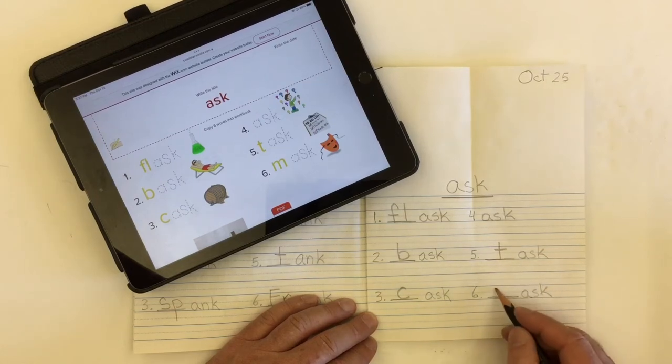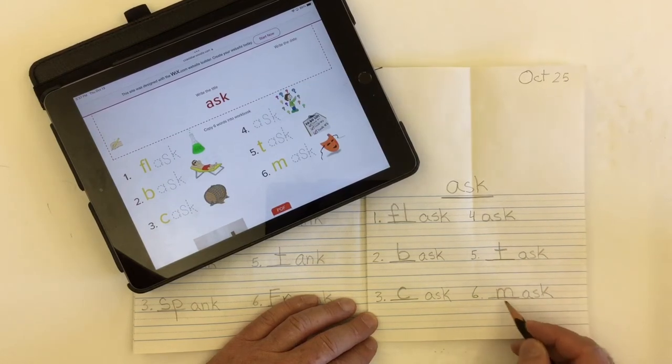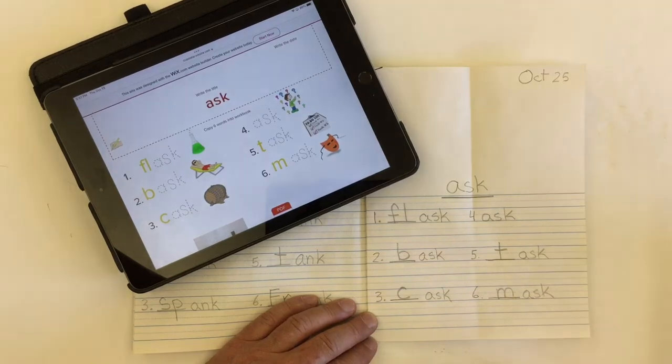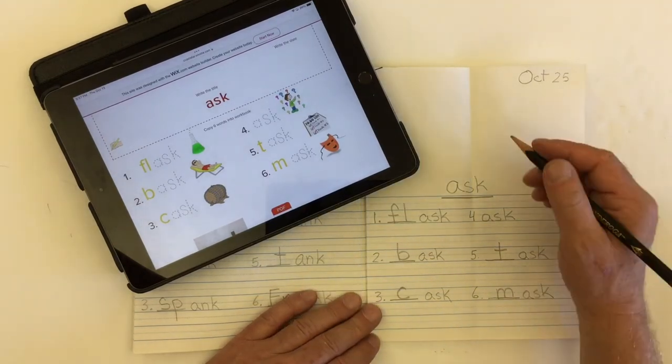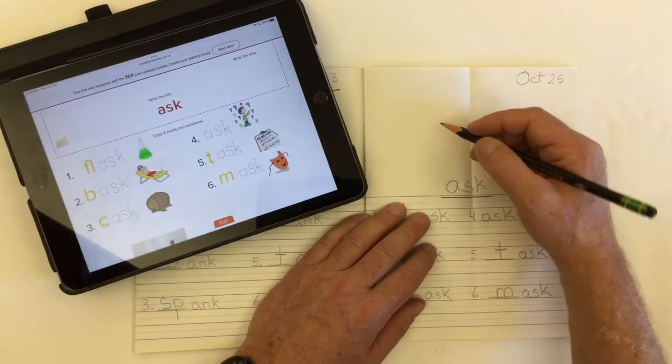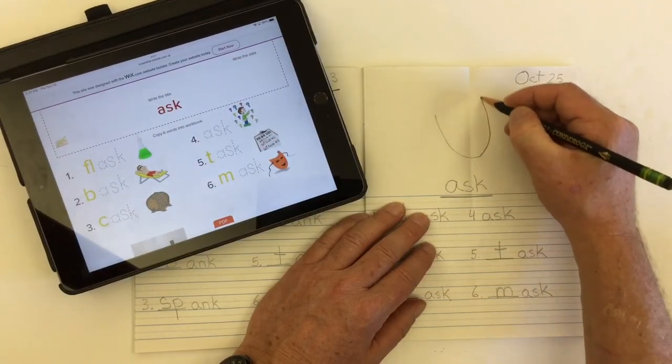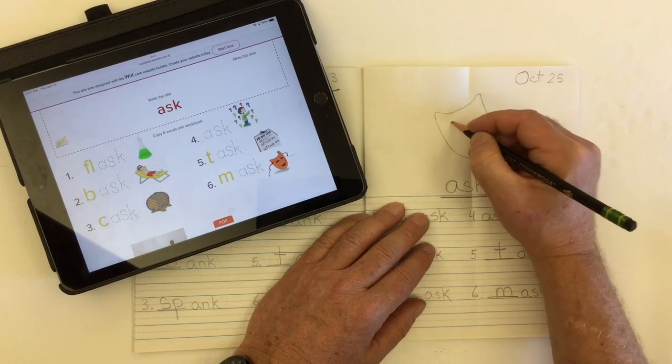And number six, the mystery letter is M for mask, like wear a mask at Halloween. I think maybe that's what I'll draw a picture of will be a mask. Let's just do a face here, some eyes.